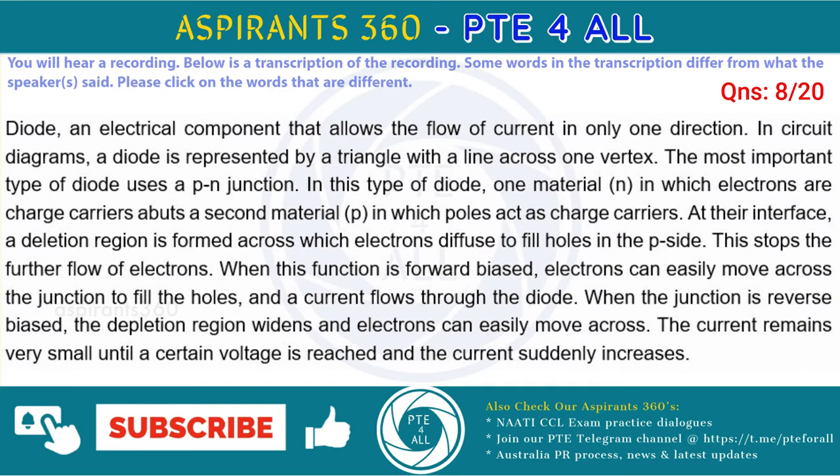Diode, an electrical component that allows the flow of current in only one direction. In circuit diagrams, a diode is represented by a triangle with a line across one vertex. The most common type of diode uses a p-n junction. In this type of diode, one material, n, in which electrons are charge carriers, abuts a second material, p, in which holes act as charge carriers.